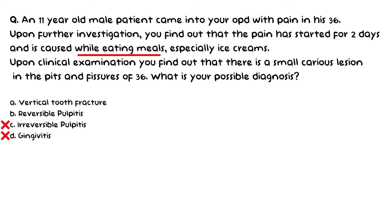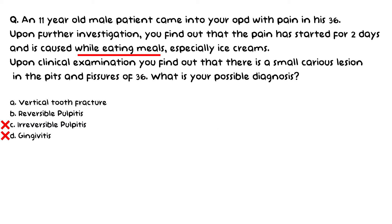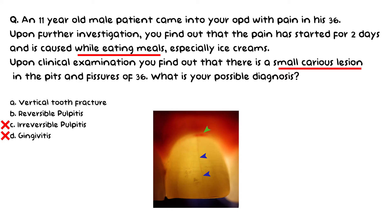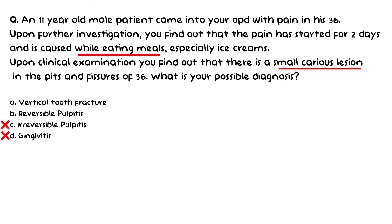Pain while eating is a classical sign of vertical tooth fracture, since load on the tooth causes severe pain, and this patient also complains of pain during mastication. However, two important details disregard vertical tooth fracture: first, there is only a small caries lesion on clinical examination with no illumination test findings or visible crack bisecting the tooth mentioned; and second, there is no history of a hard diet such as betel nuts. Therefore, the most probable answer is reversible pulpitis.